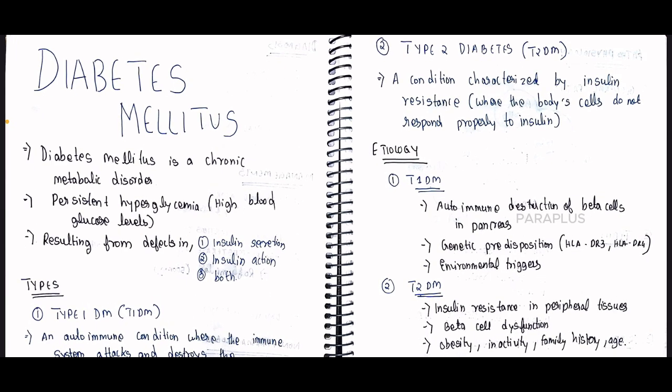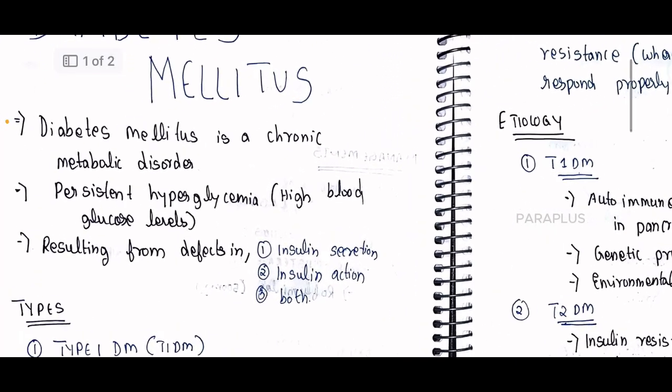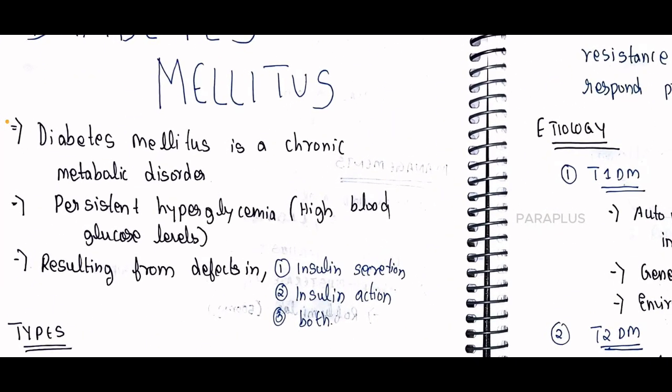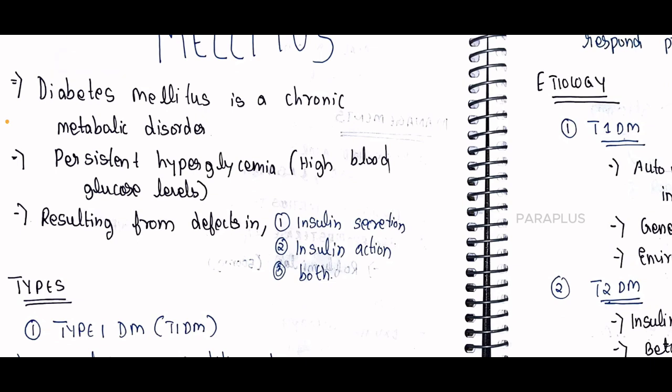The condition involves persistent hyperglycemia — high blood glucose level. This results from defects in insulin secretion, insulin action, or both. So insulin is the problem. That is why glucose levels are elevated and not properly regulated — insulin is not properly secreted or regulated, leading to diabetes mellitus.